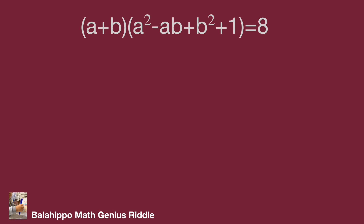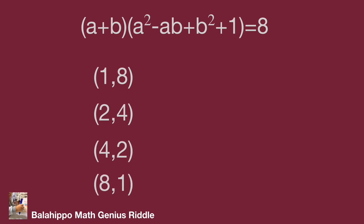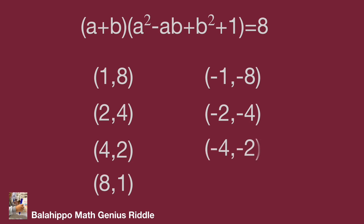We can get the following number groups. The positive pairs are: one and eight, two and four, four and two, and eight and one. Also for the negative number groups: minus one and minus eight, minus two and minus four, minus four and minus two, and minus eight and minus one.